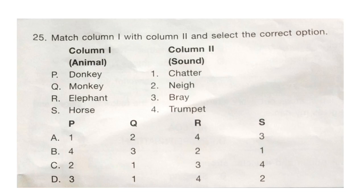Question 25: Match column 1 with column 2 and select the correct option. Column 1 is given with animals and column 2 with sounds. P is donkey — sound is bray. Monkey — chatters. Elephant — trumpet. Horse — neigh. So PQRS will be 3142, that is option D.